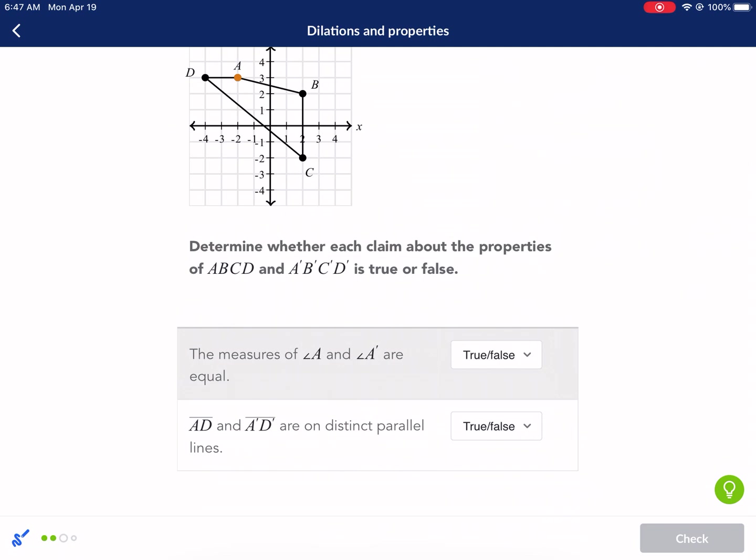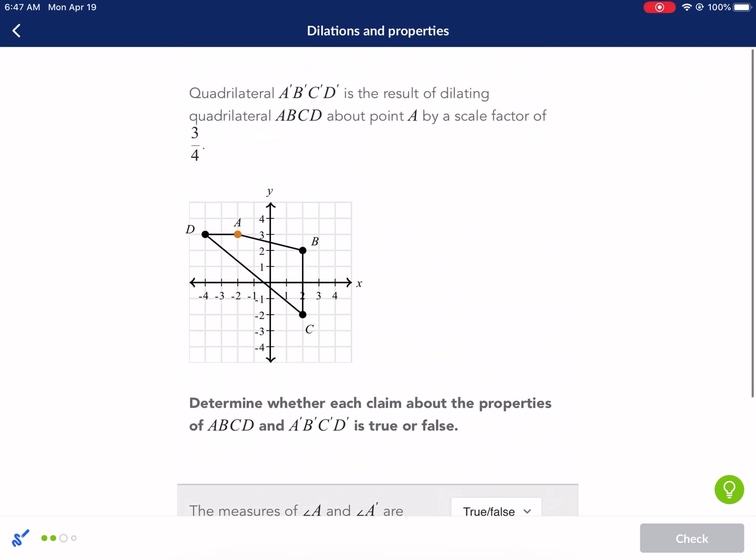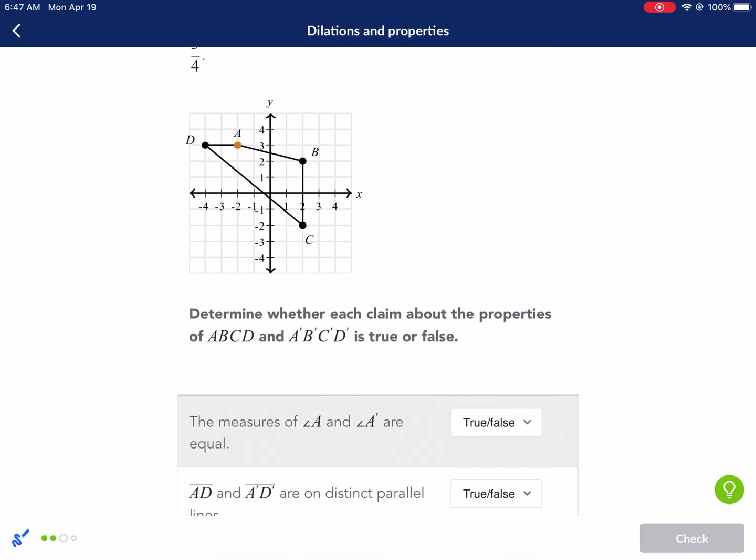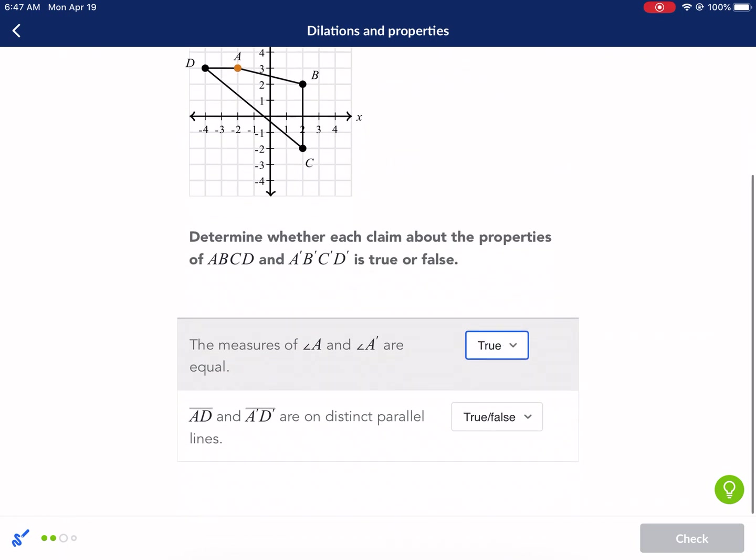Let's take a look. The measures of angle A and angle A prime are equal. We already talked about that. It maintains its proportion as it shrinks or grows, so that is true.